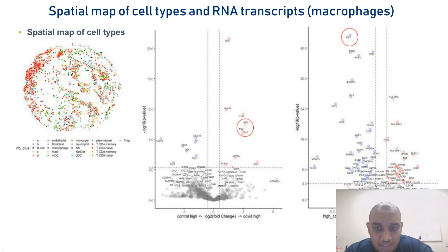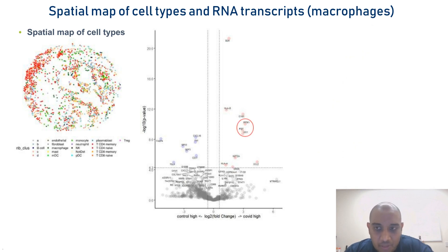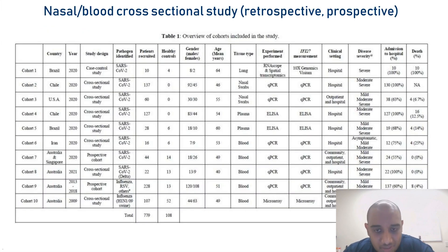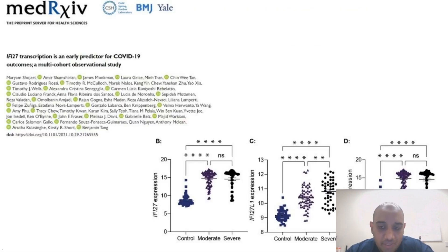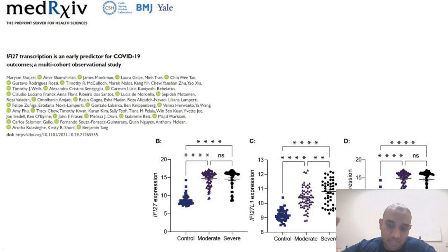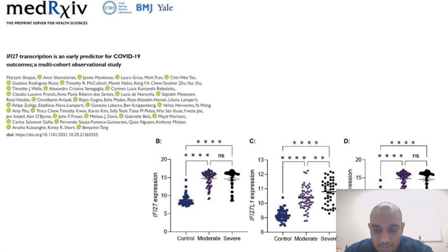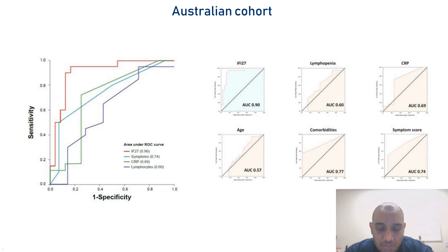IFI27 was a key gene we wanted to investigate in blood and nasal samples of COVID-19 patients. In a retrospective and prospective study across Brazil, Chile, the US, Singapore, Australia, and Denmark, we looked at about 800 patients and 108 controls pre-Omicron, measuring IFI27 levels in blood and nasal swabs within the first few days of symptom onset. IFI27 alone predicted disease severity when measured in the blood — in a stepwise manner, patients who developed severe symptoms and went on to ICU could be distinguished. IFI27 in blood outperformed other clinical assessments such as lymphopenia, CRP, age, comorbidities, and symptom score.